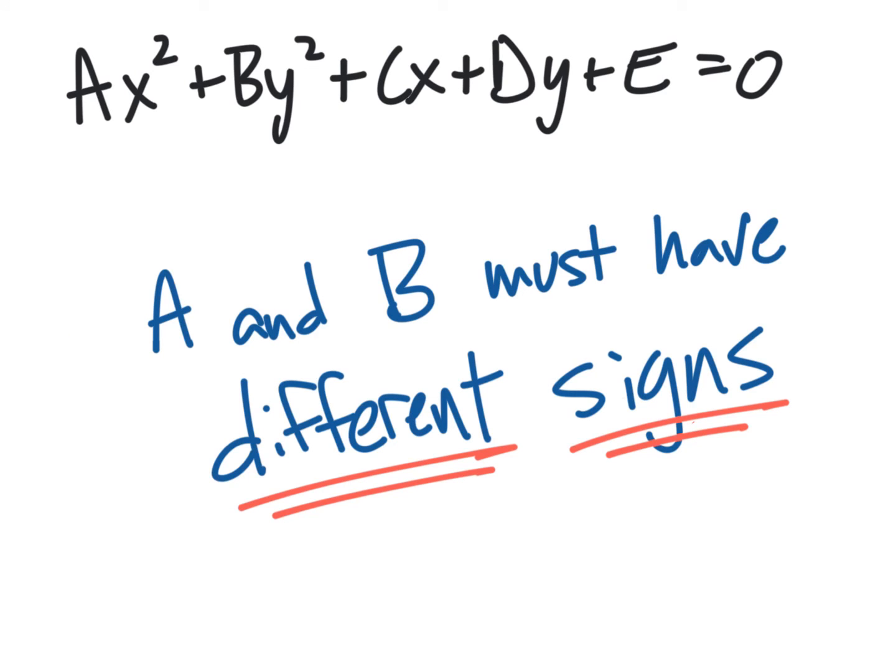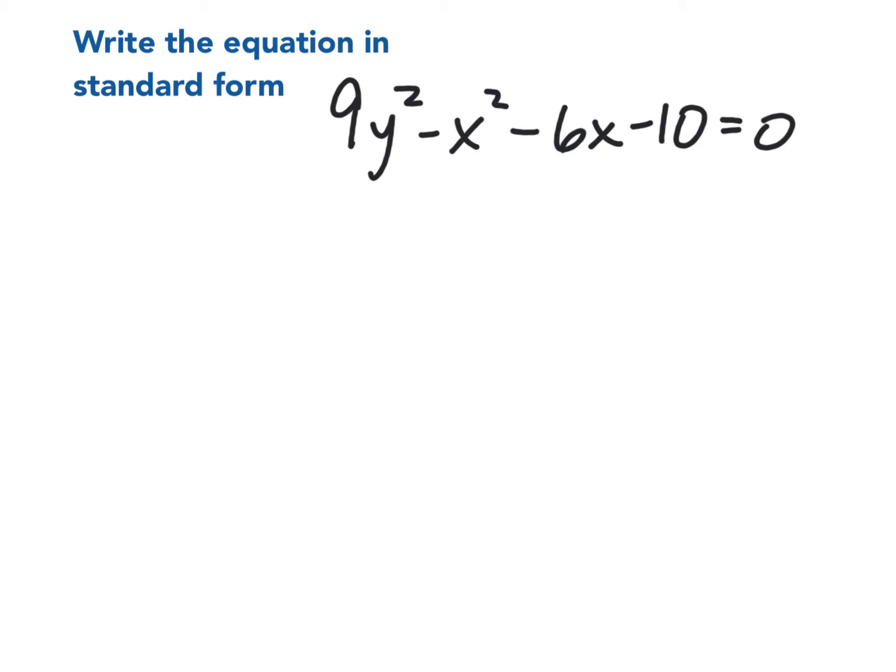Now in general form, for ax² + by² + ..., a and b just must have different signs. They can be the same number, they just have to be different signs, like one positive and one negative. So looking at this 9y² - x² - 6x - 10 = 0, I can tell it's a hyperbola because I have a positive y² and a negative x². That also lets me know that this would be a vertical hyperbola because the y is positive. So let's complete the square and figure out the equation of this hyperbola. First thing I want to do is get the 10 on the other side.